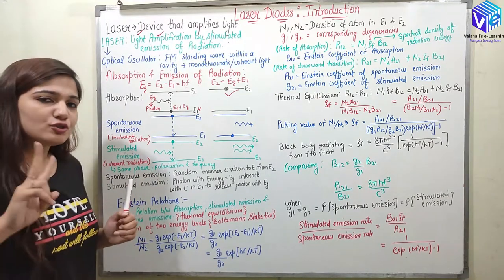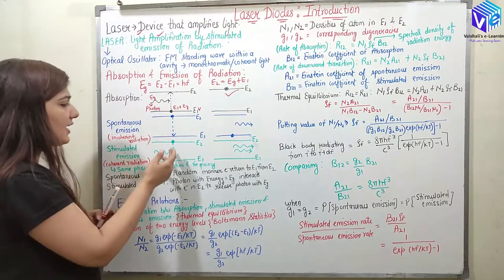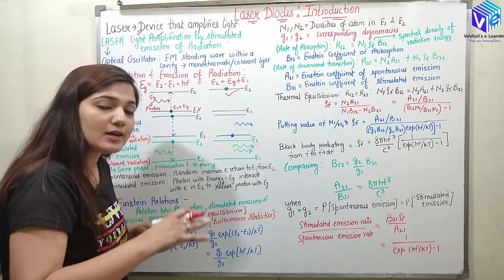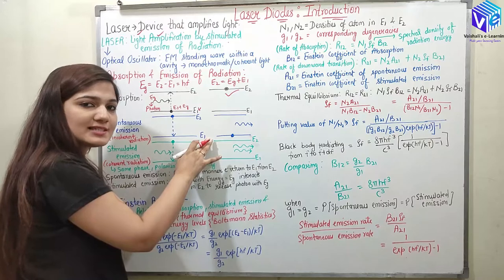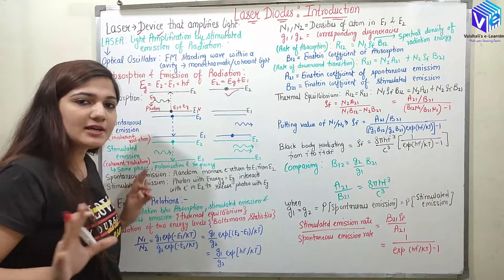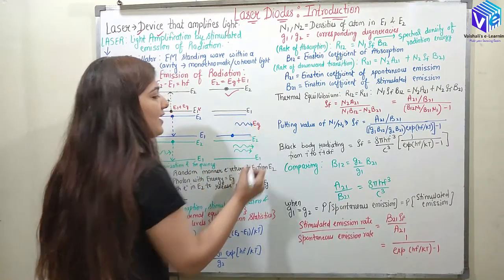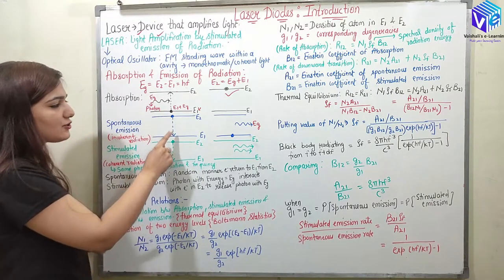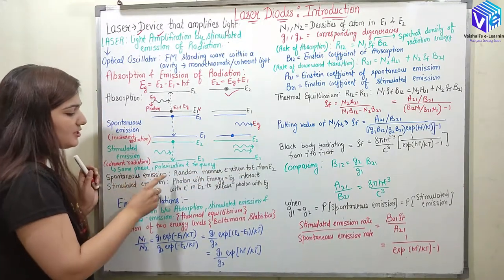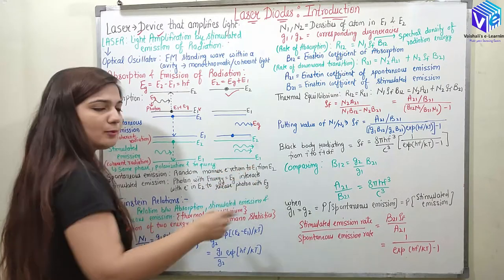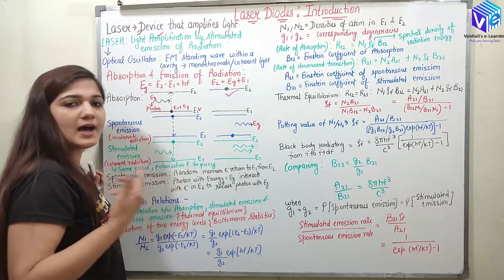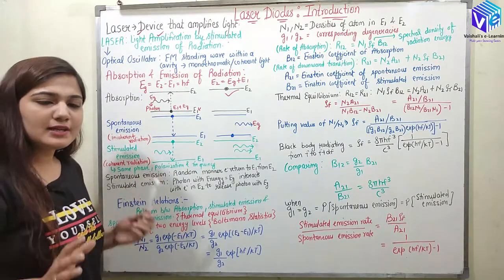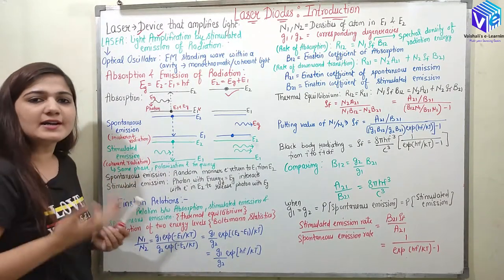Now coming to spontaneous emission. We have two types of emission. The electron is at the higher energy state and randomly it can come back to the previous lower energy state. When it comes back to the lower energy state, energy decreases in value. Since energy can never be created nor destroyed, a photon of energy equal to EG is created. So when we have the random returning of the electron from E2 to E1, it gives us a photon. Spontaneous emission is this random manner in which an electron returns from the higher energy state E2 to E1, producing incoherent radiation.